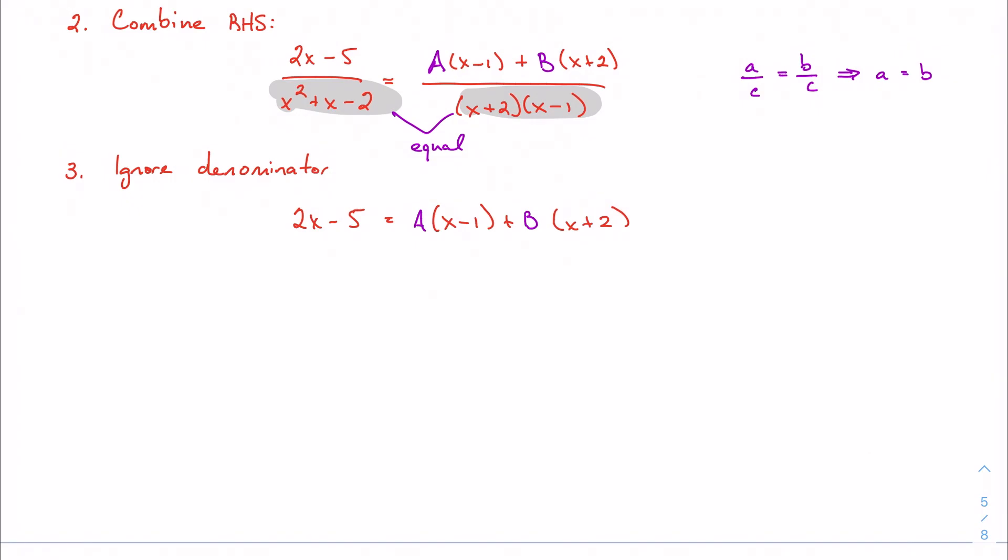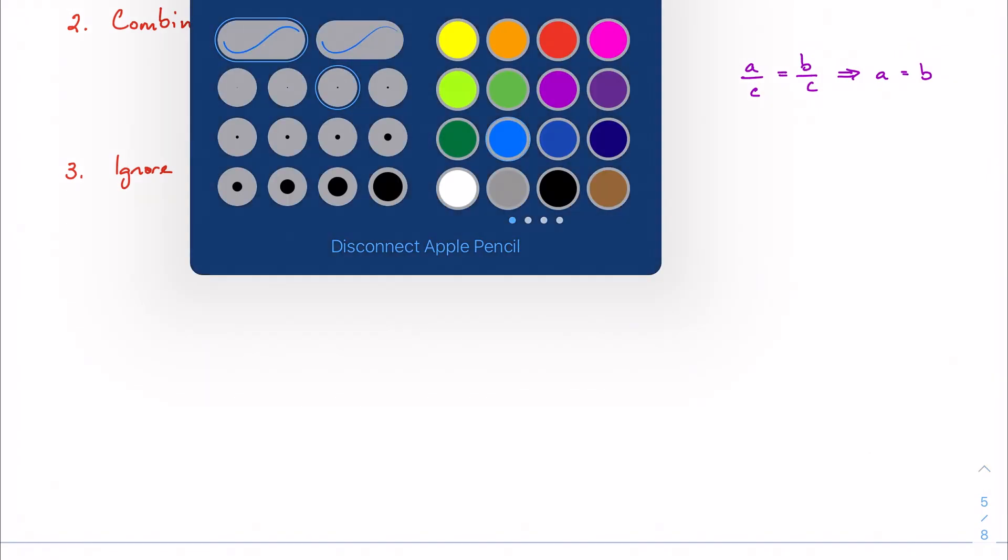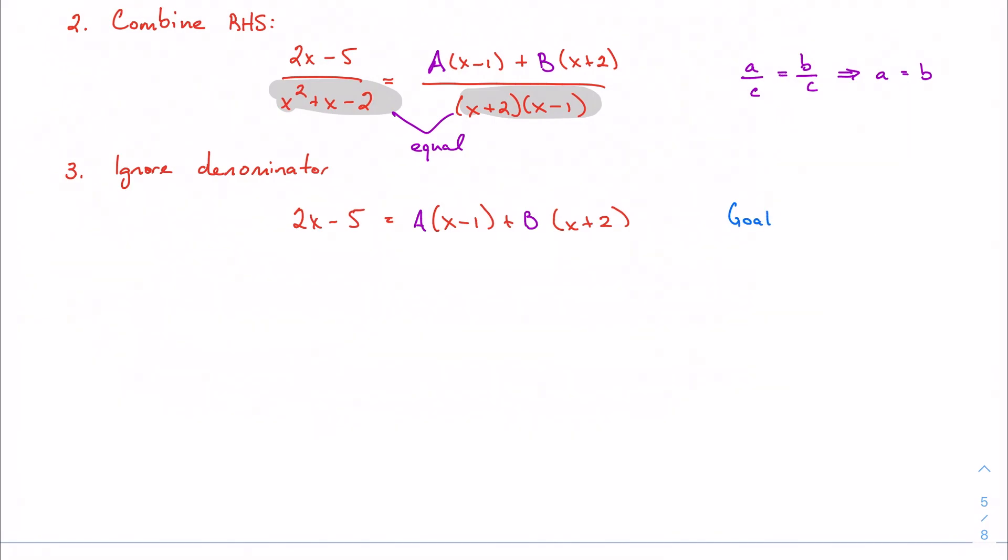Our goal, essentially, is to solve for A and B. Normally, how you would do that is to make a system, right? We could pick whatever values for x we want to give us two different equations that we could solve simultaneously and get A and B. Yeah, sure, whatever, you could do that. But you could make it much easier.